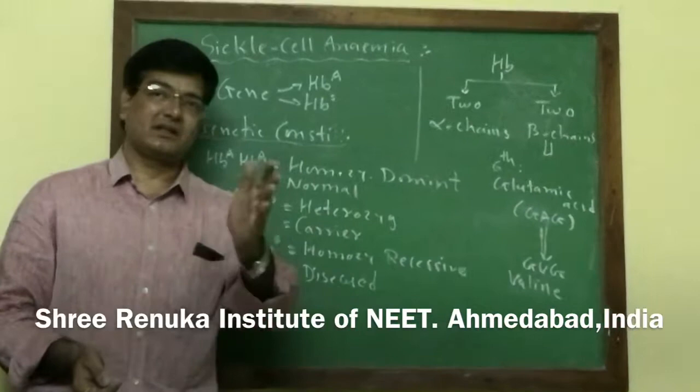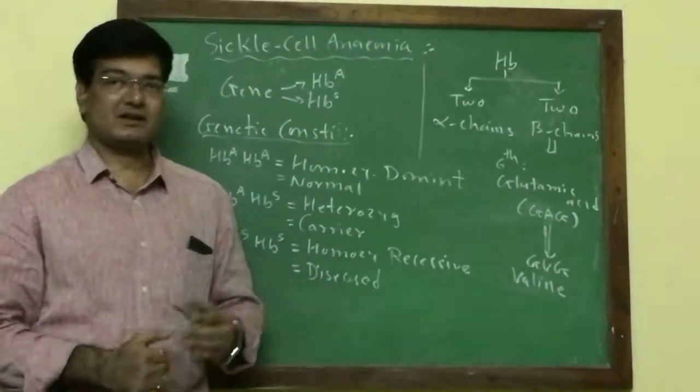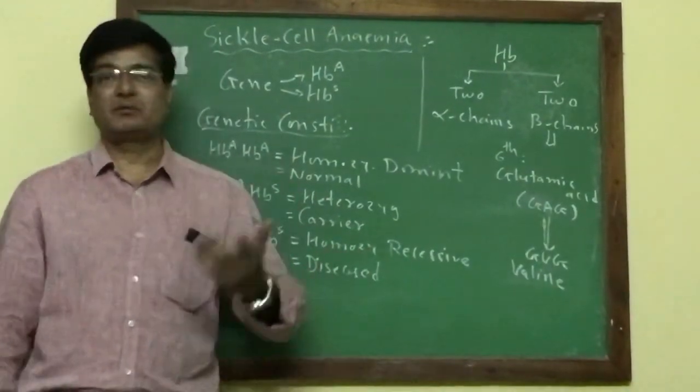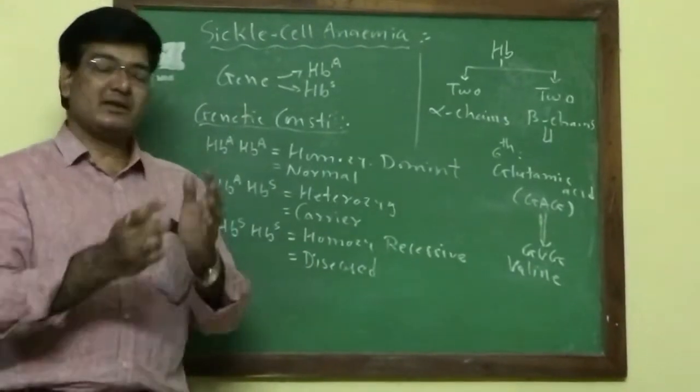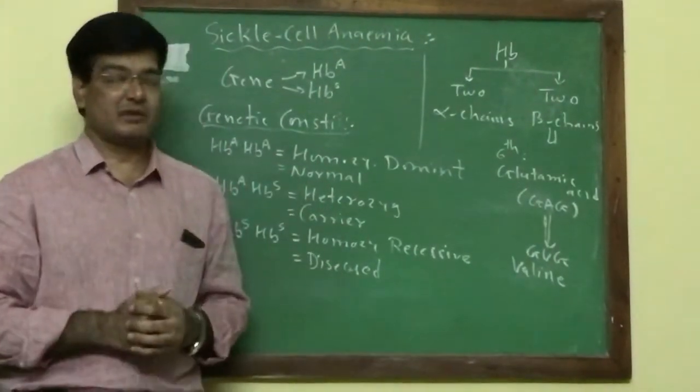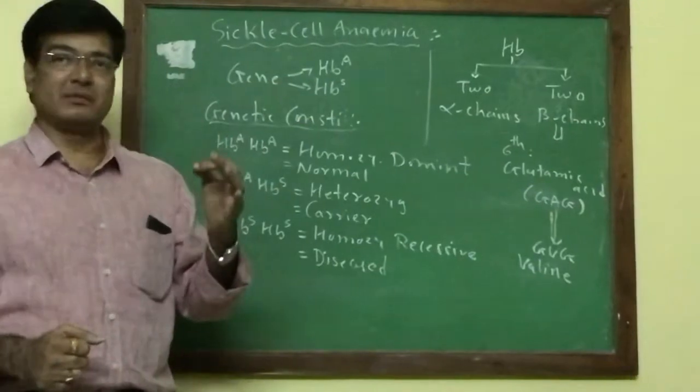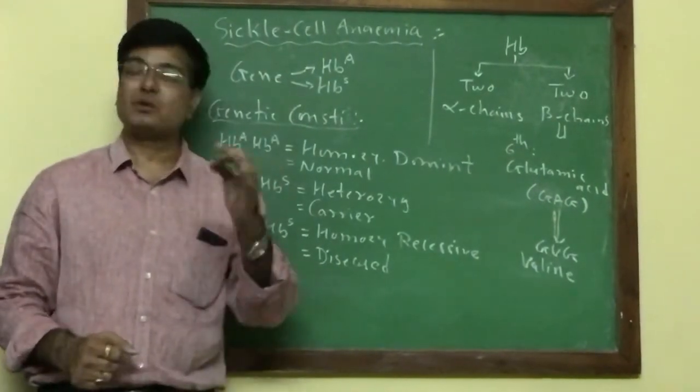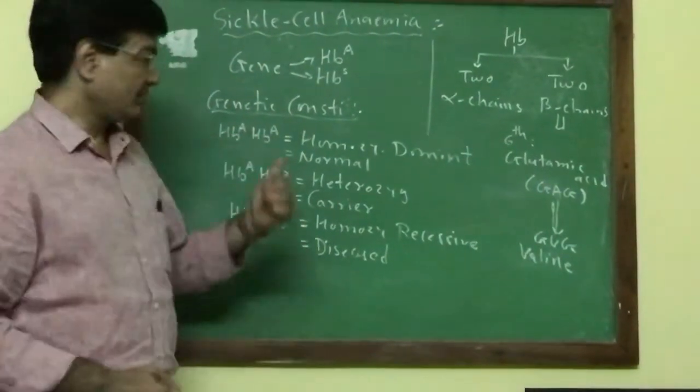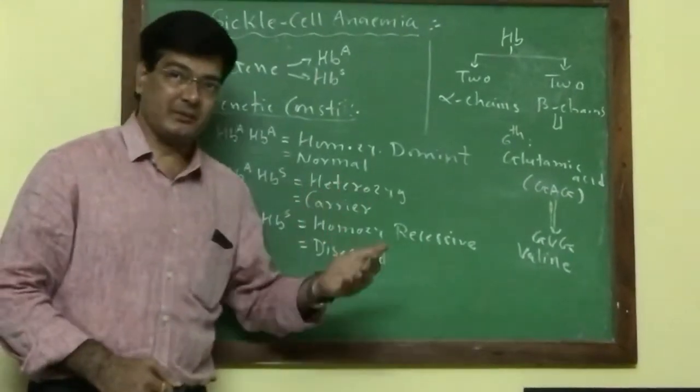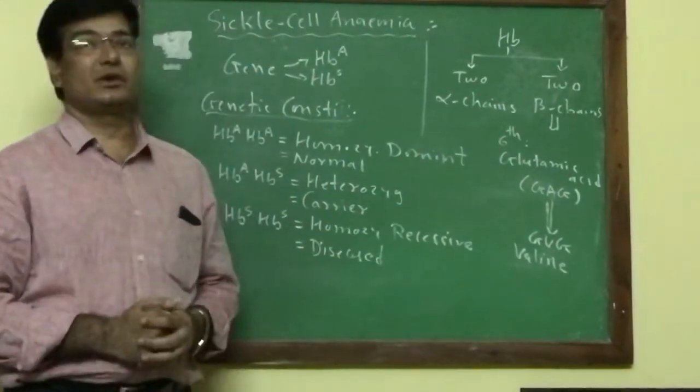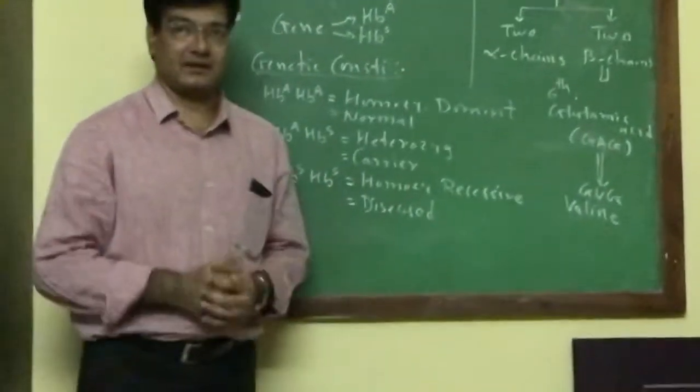Some people who suffer from sickle cell anemia are always immune to malaria disease, because the malaria parasite Plasmodium needs a proper RBC to complete its life cycle. But in this condition, RBCs change their shape, and that's why the Plasmodium could not complete its life cycle.